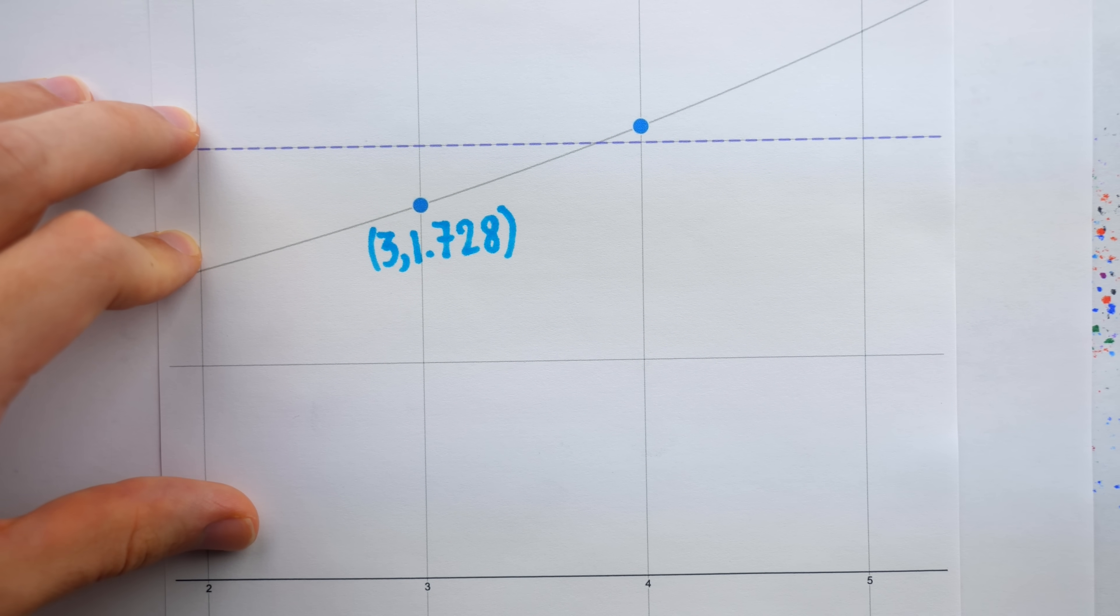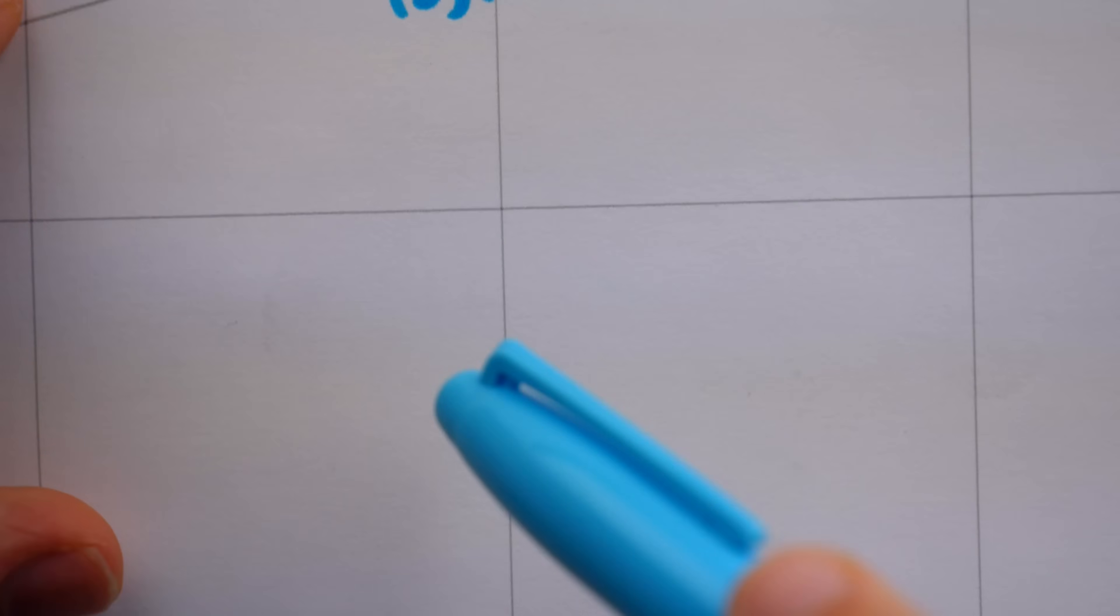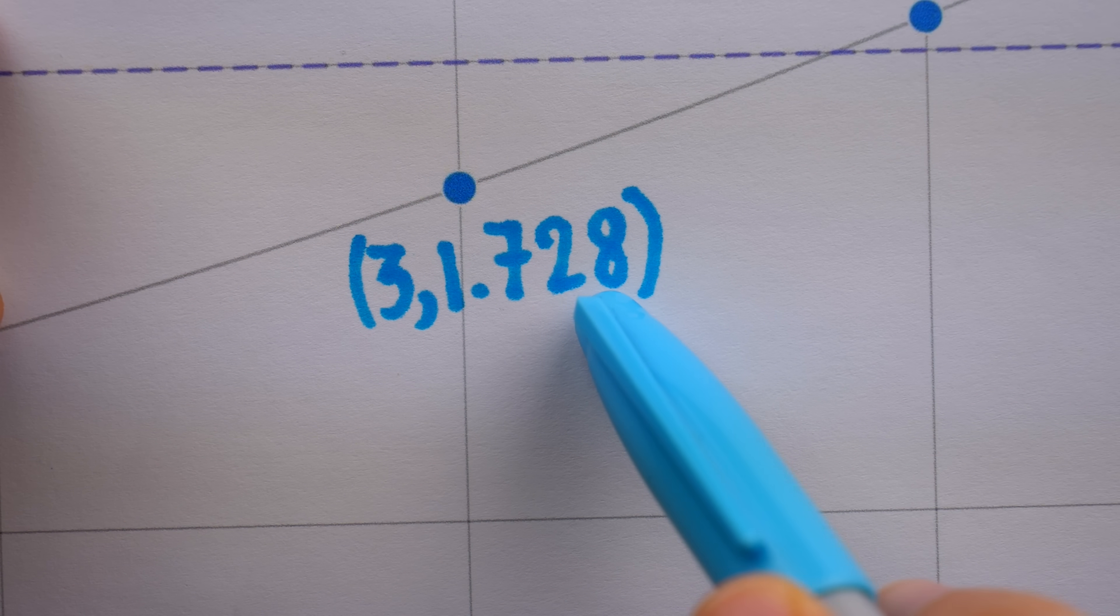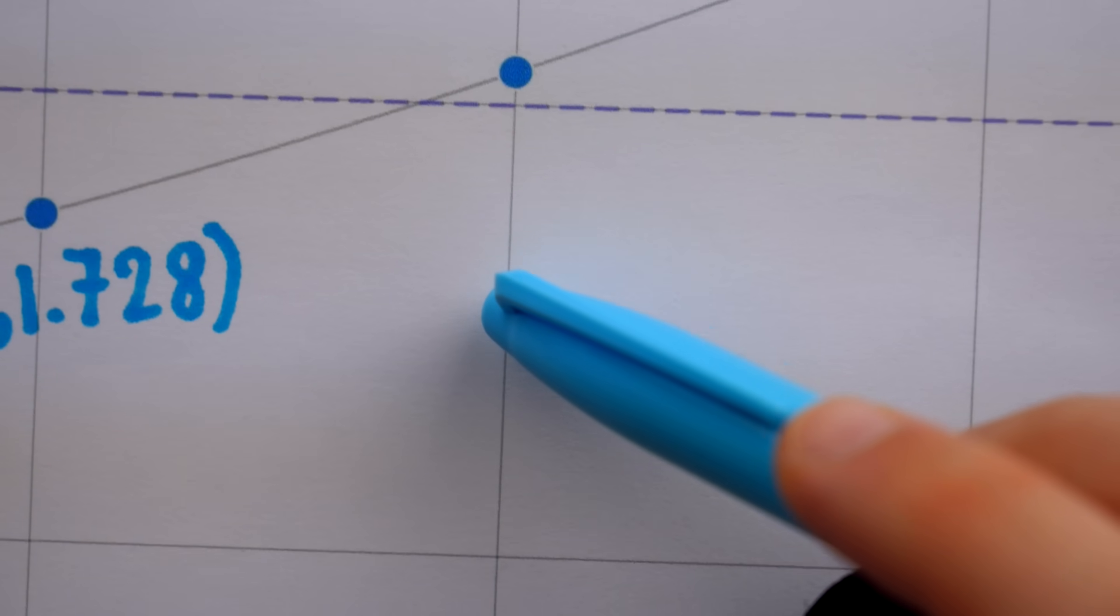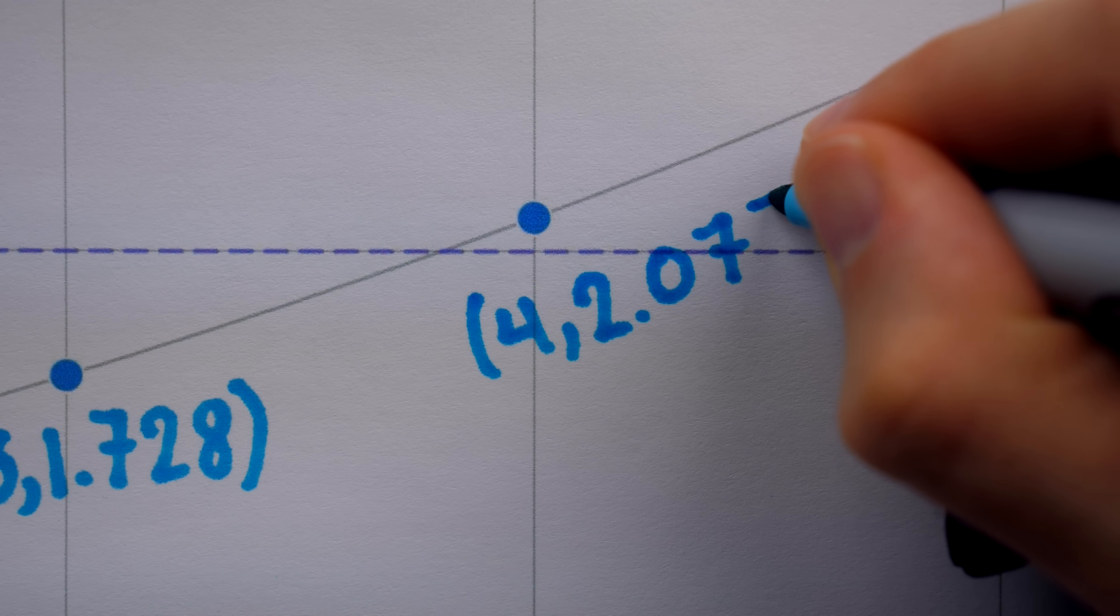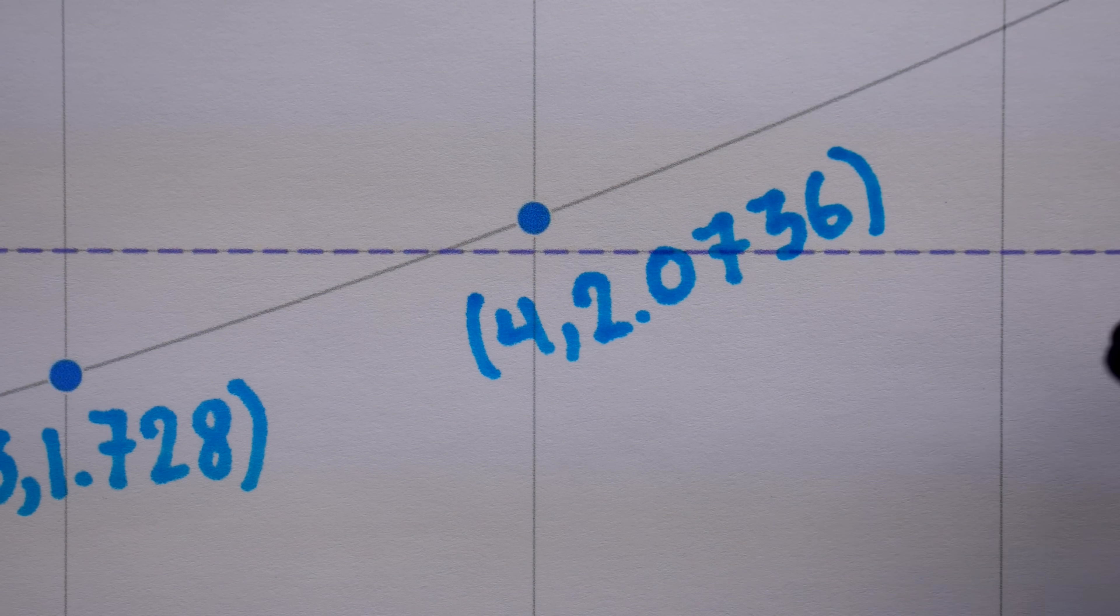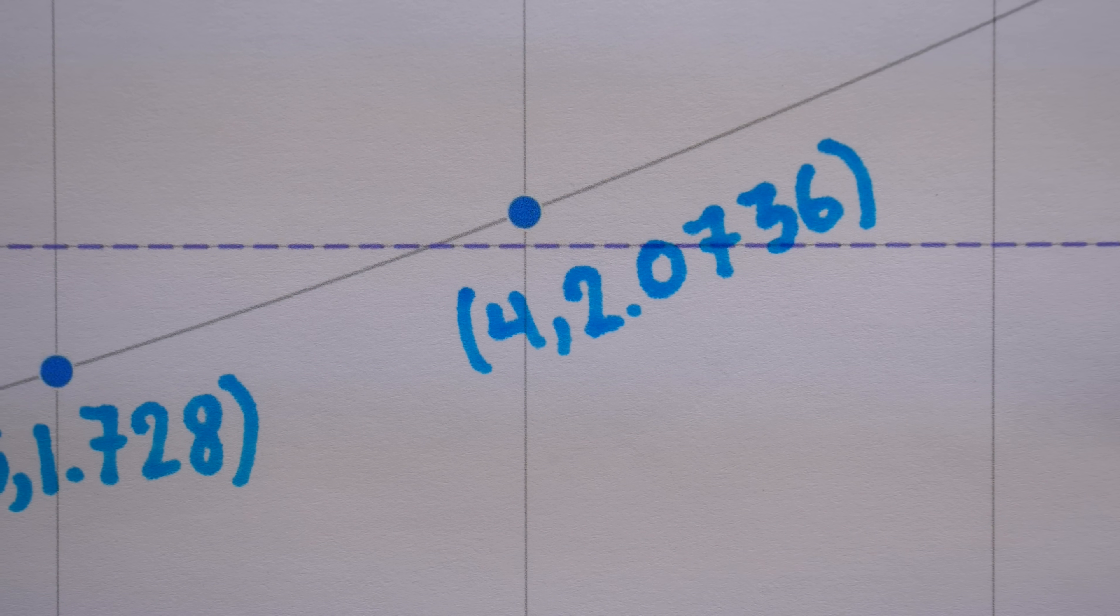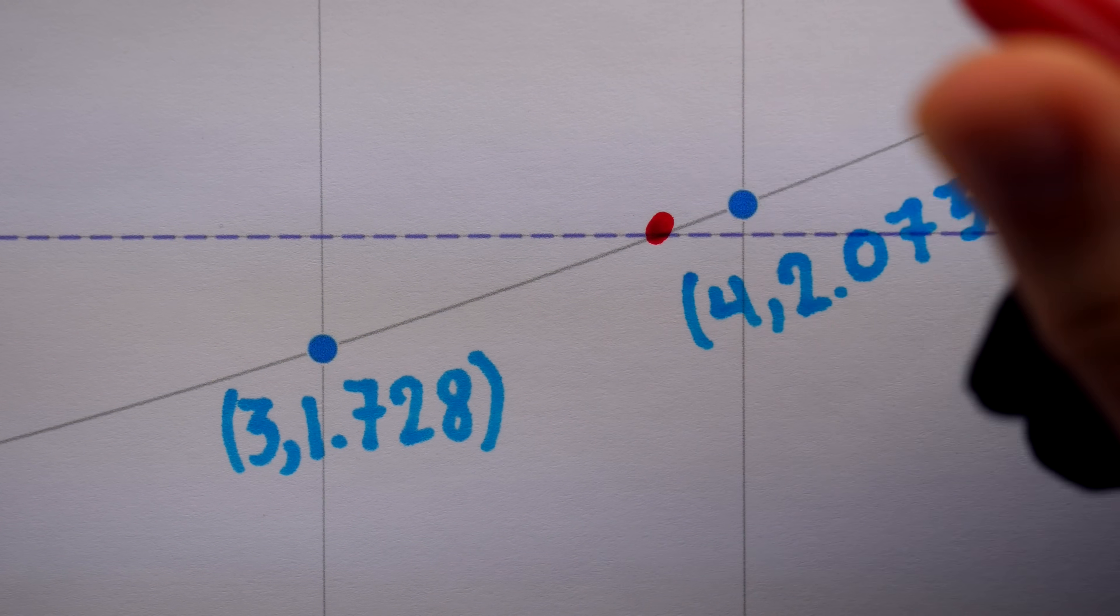To solve the doubling money problem, the Babylonians noticed 1.2 to the 3 was 1.728, which is less than 2. It's too small. But 1.2 to the power of 4 is 2.0736, which is greater than 2. That's too big. So the exponent of 1.2 that would produce 2 had to be between 3 and 4.